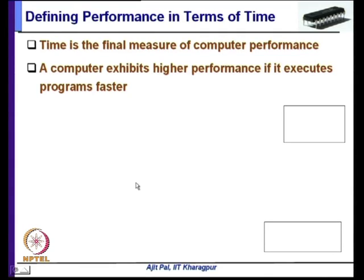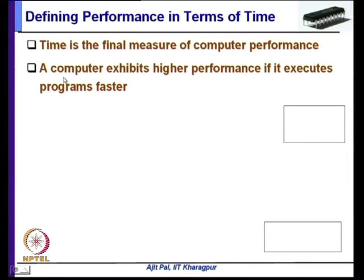The question is: how do you really measure performance? Obviously, it is time — time is the ultimate measure of performance. A computer exhibits higher performance if it executes a program faster. Whenever you try to measure performance, you measure the execution time. Faster the execution time, the better the performance.